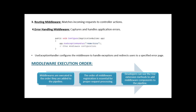Number three is the routing middleware, which matches incoming requests to controller actions. We can also define our default routing here. Number four is the error handling middleware, which captures and handles application errors. Using app.UseExceptionHandler, we can route exceptions to a specific page — for example, home/error. This prevents exposing raw exceptions to users and redirects them to a defined error page.